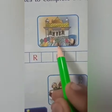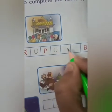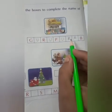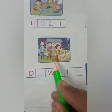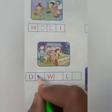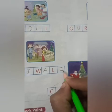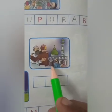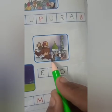Next, which festival is this? Gurpurab. Yes. So G-U-R-U-P-U-R-A-B, Gurpurab. This is the festival of Gurpurab. Now tell me which festival is this? Yes, this is the festival of Diwali. D-I-W-A-L-I, Diwali. Which festival is this? Eid. So write E-I-D, Eid. This is the festival of Eid.